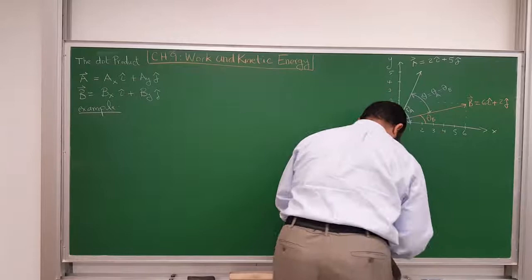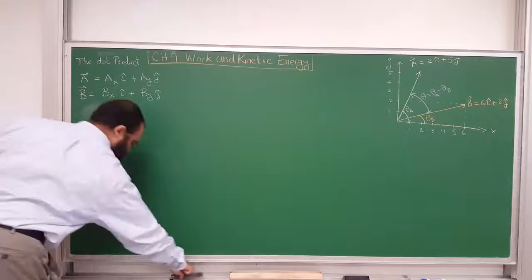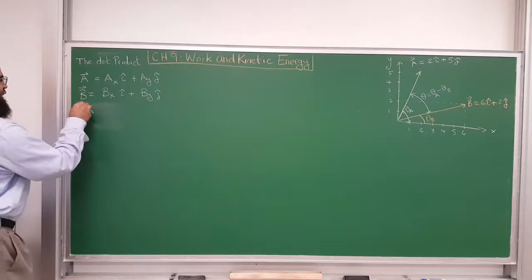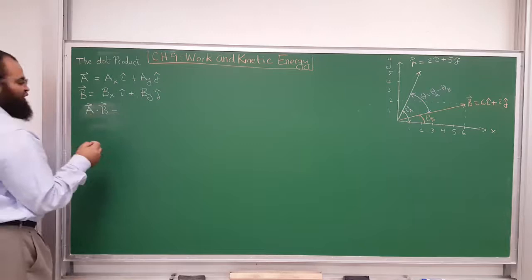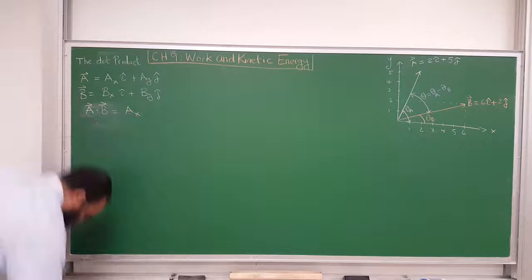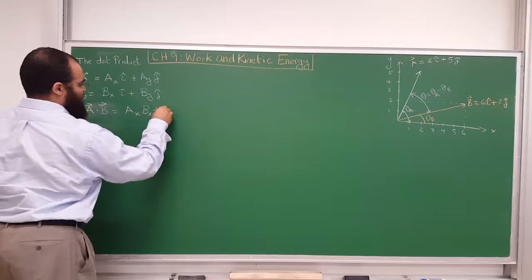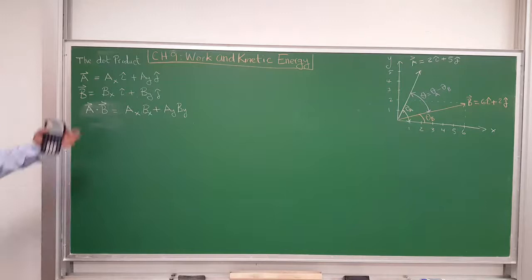So here is the definition of the dot product: A dot B is a scalar — you take two vectors and multiply them in this special way to get a scalar. It equals the x-component of A times the x-component of B, plus the y-component of A times the y-component of B, plus the z-component of A times the z-component of B. That's just by definition.